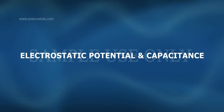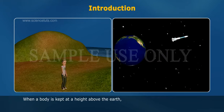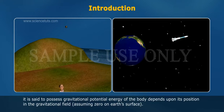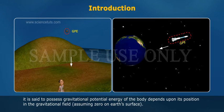Electrostatic Potential and Capacitance — Introduction. When a body is kept at a height above the earth, it is said to possess gravitational potential energy. The potential energy of the body depends upon its position in the gravitational field, assuming zero on earth's surface.